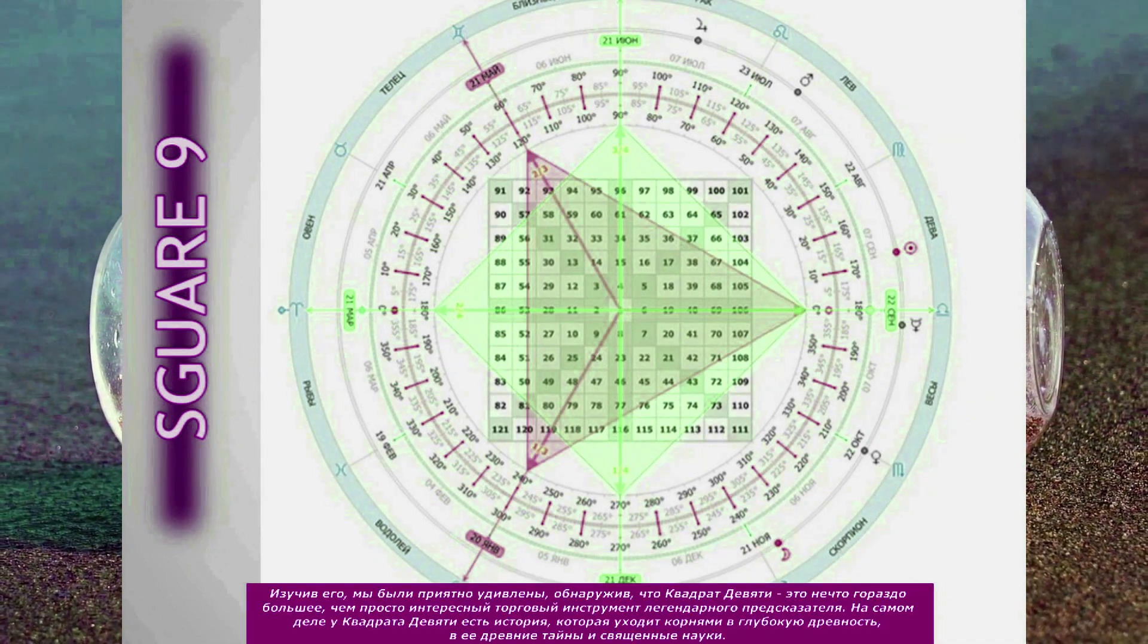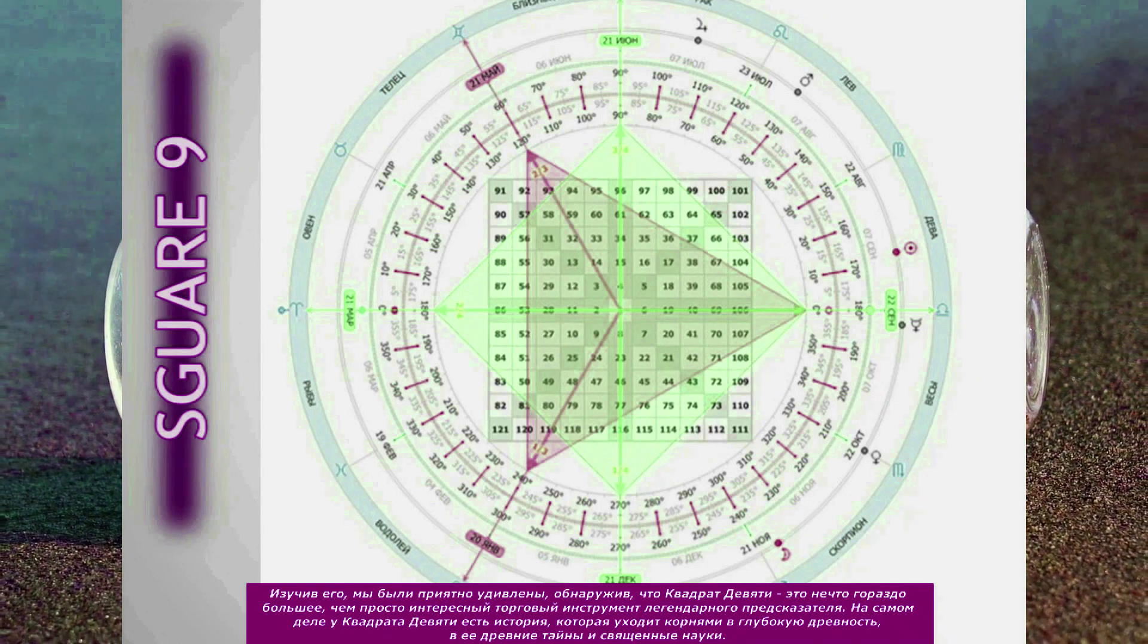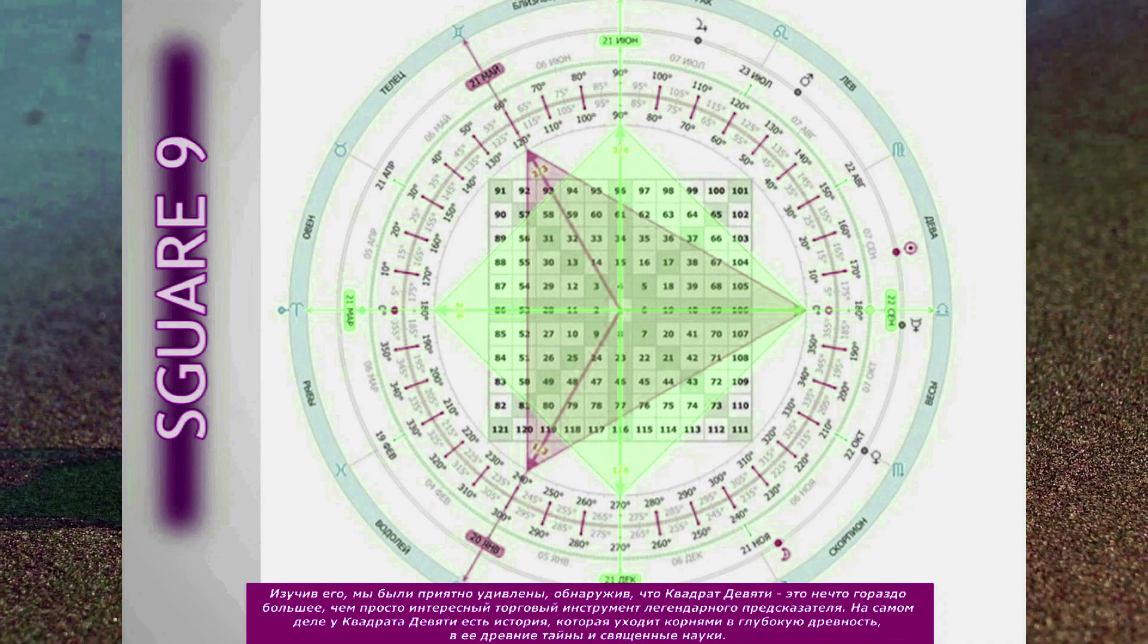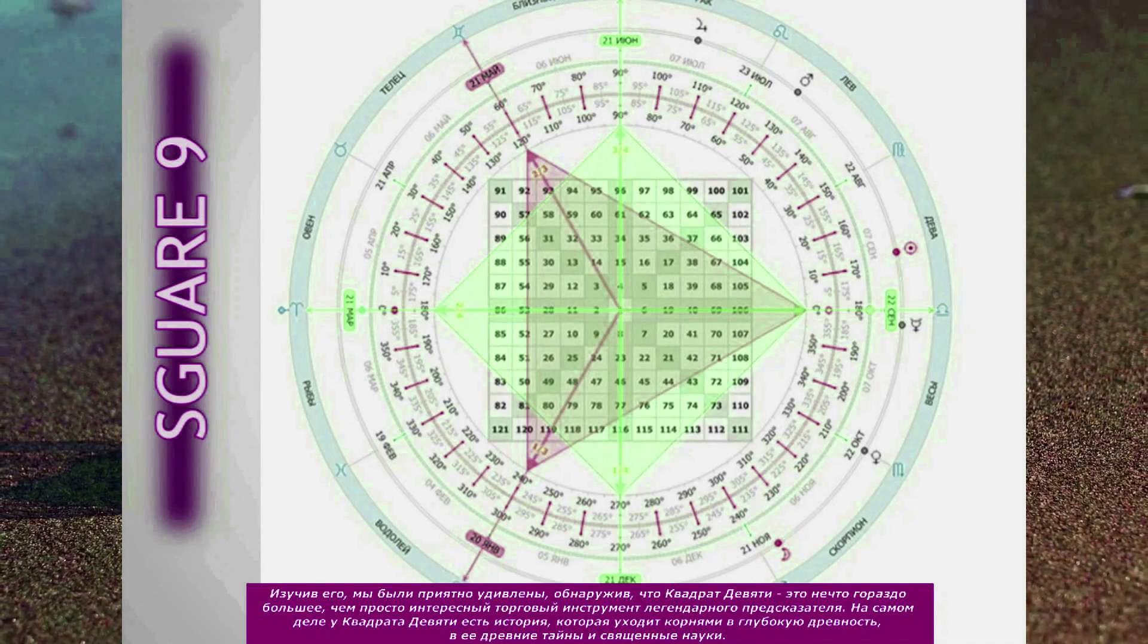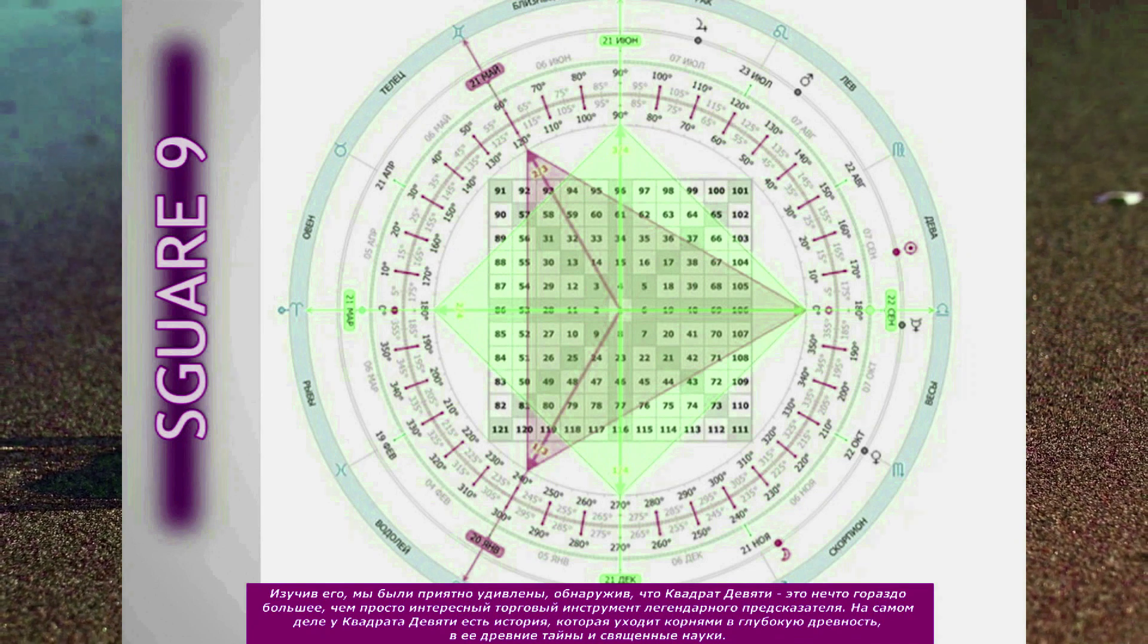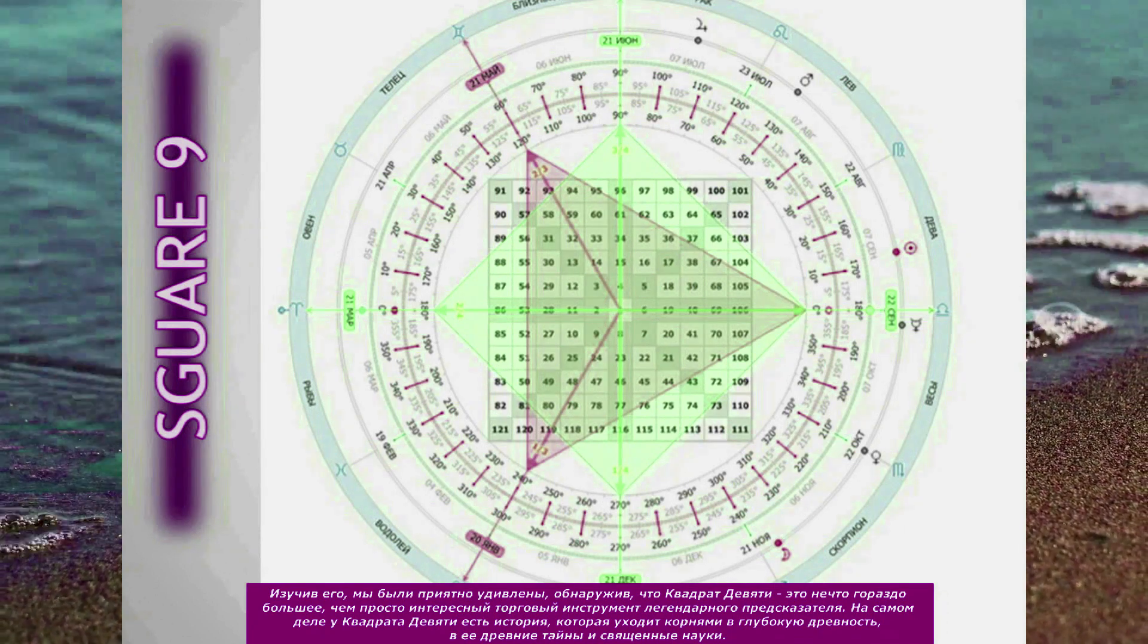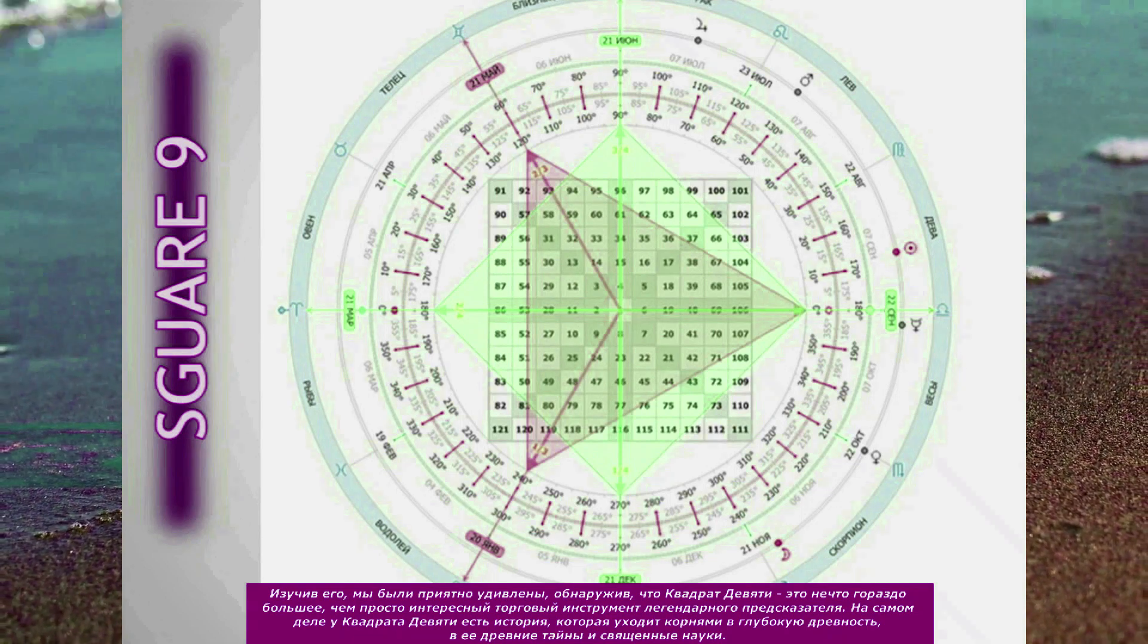Upon exploration, we are pleasantly surprised to find that the Square of 9 is something that extends far beyond being simply an interesting trading tool of a legendary forecaster. In fact, the Square of 9 has a history which extends into the far reaches of antiquity, deep into its ancient mysteries and sacred sciences.